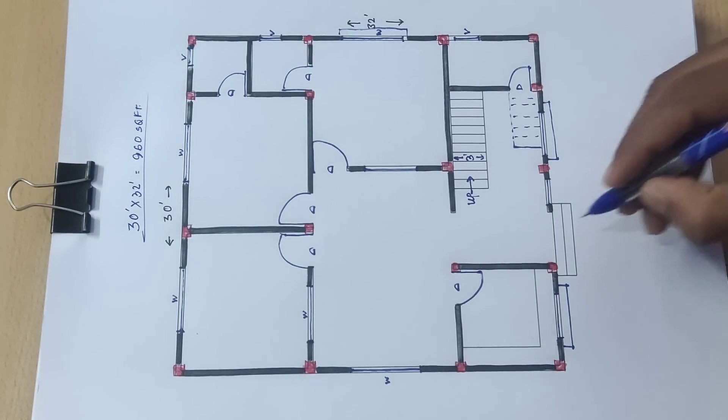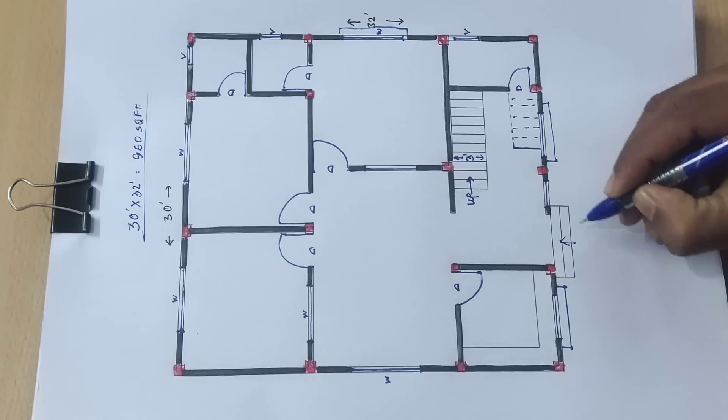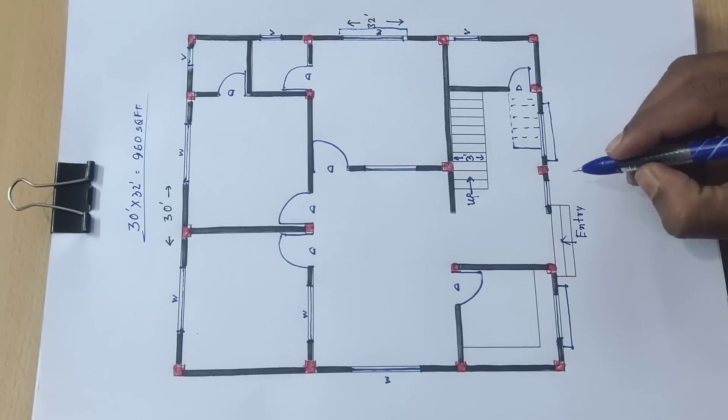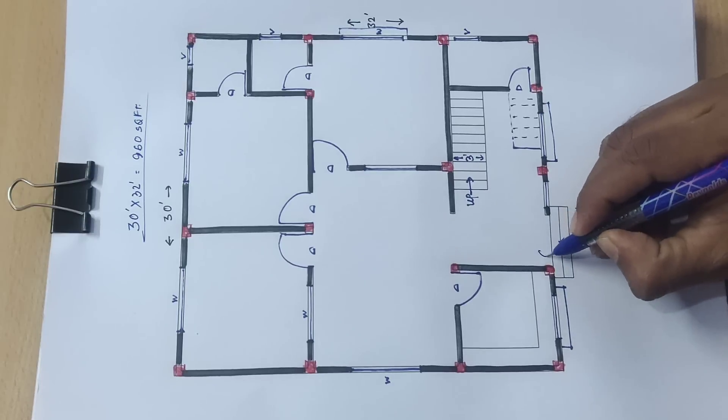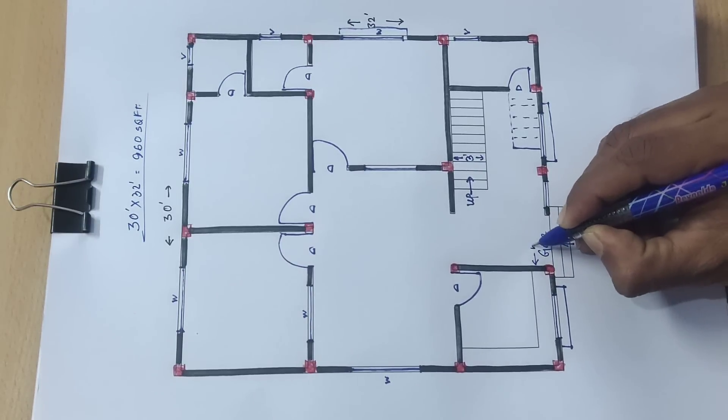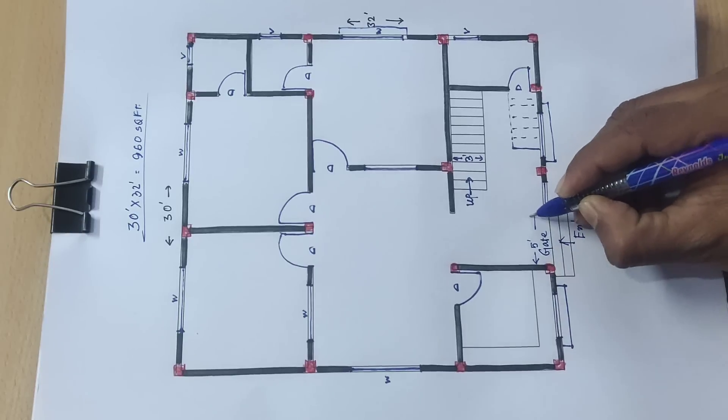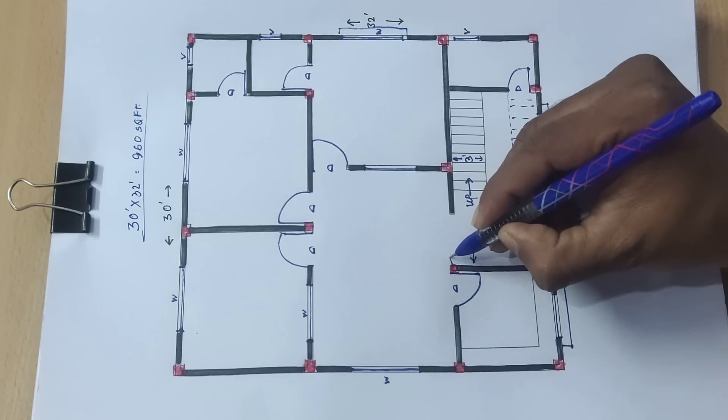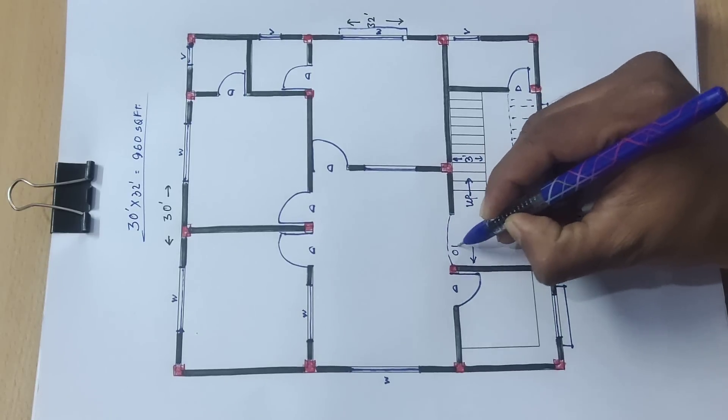Next, detailing. We will start from entry. Entry gate, the gate distance is 5 feet wide. And this side distance, there will be arch opening.